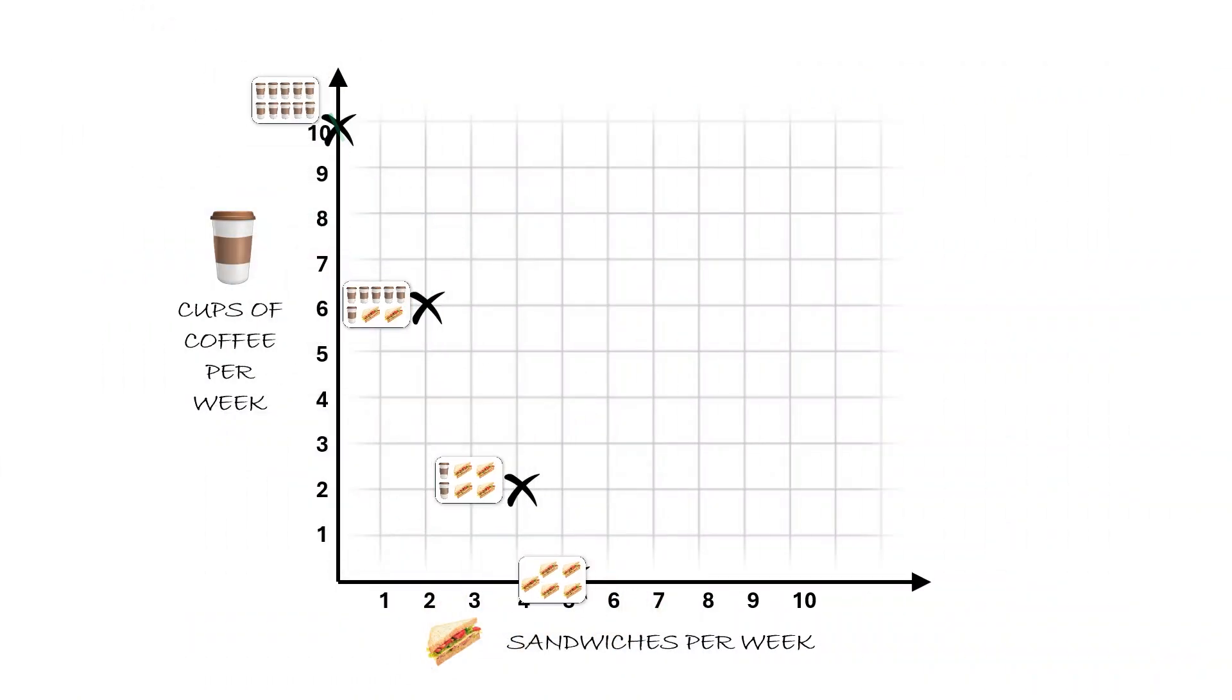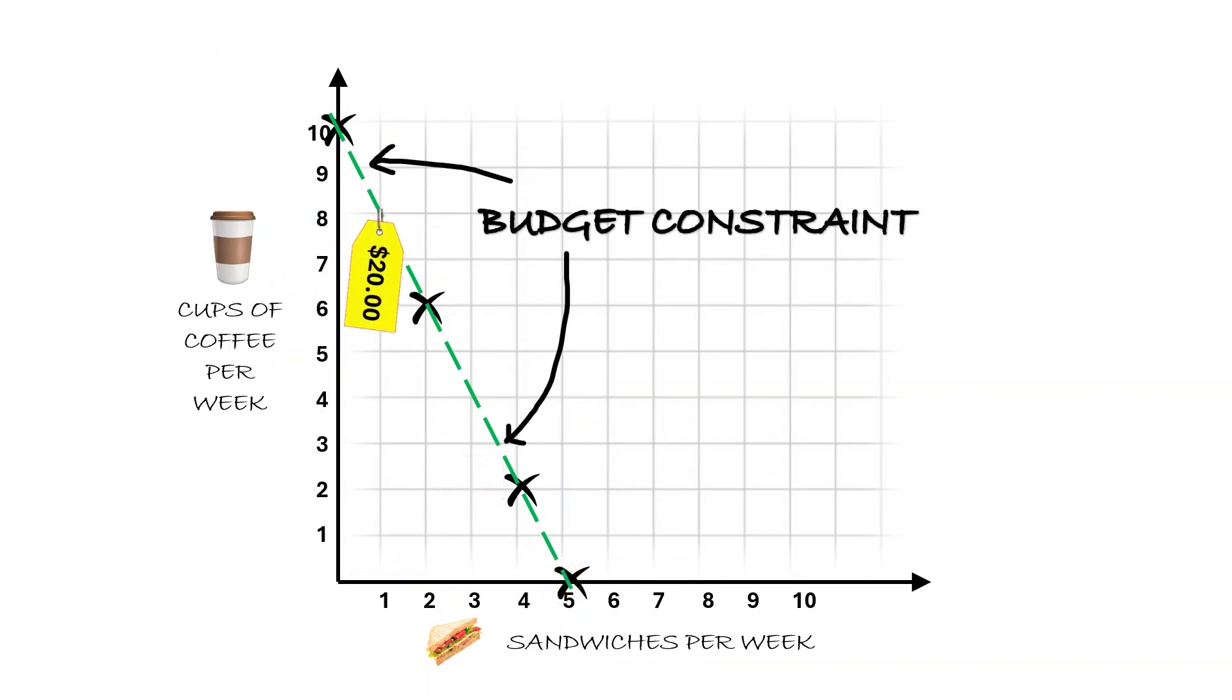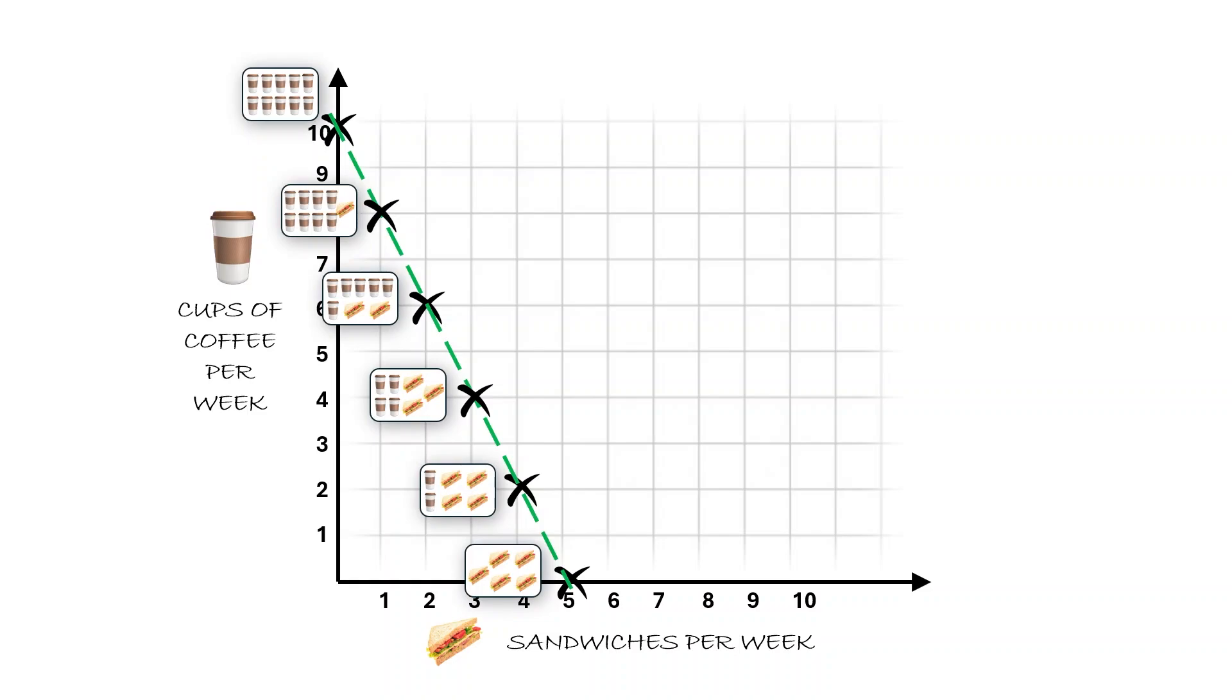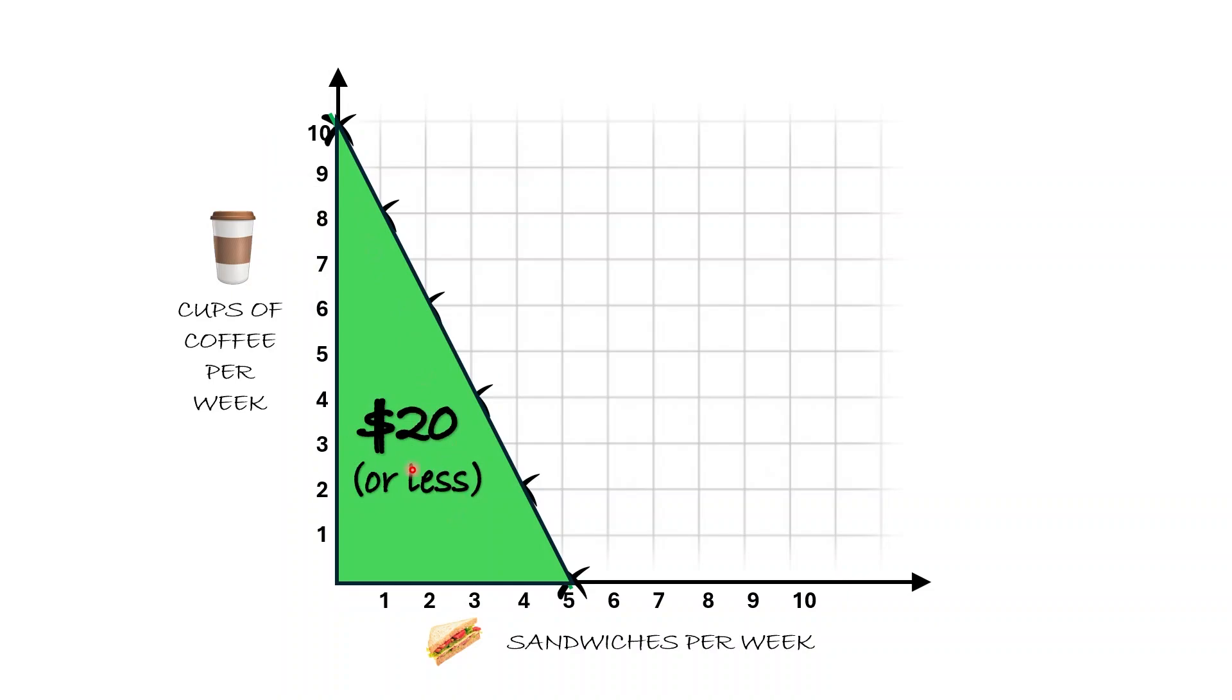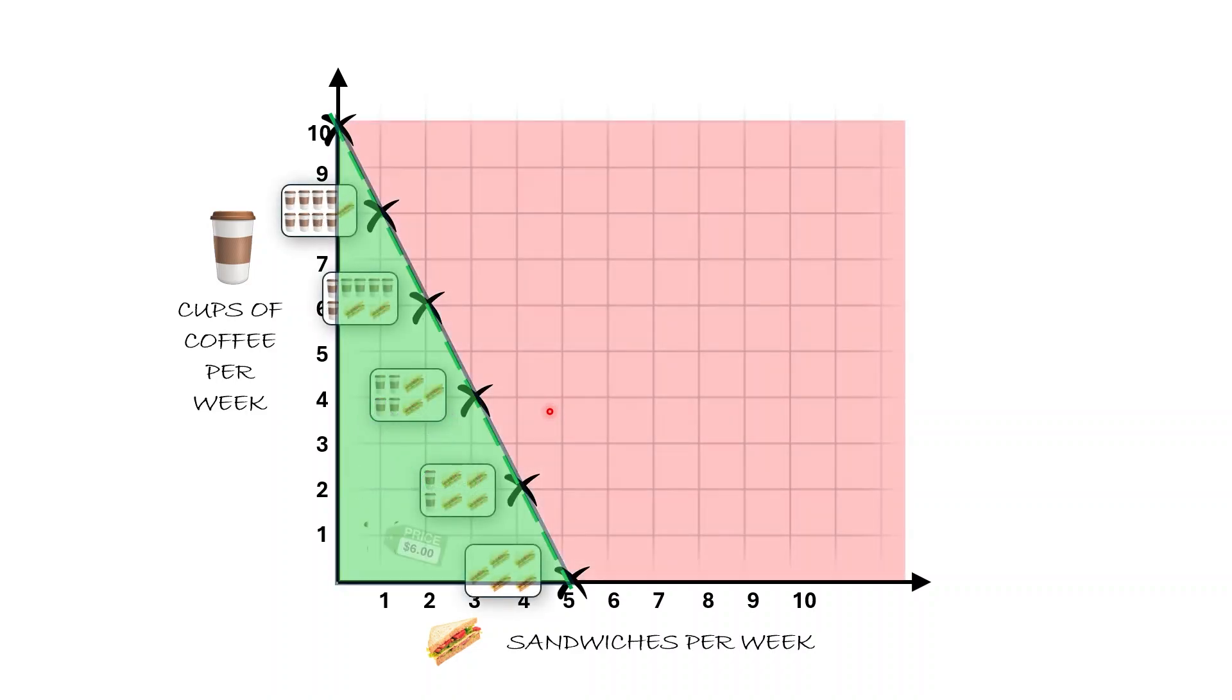Let's plot these combinations on a graph. Each point represents a bundle you could buy with your given budget. The straight line connecting these points is your budget line. It shows all the combinations you can buy with your $20. The budget line represents all affordable combinations of two goods, clearly distinguishing between what is within your budget and what lies beyond it.